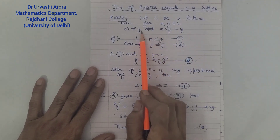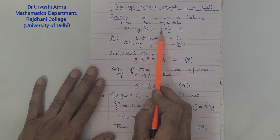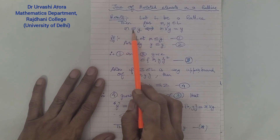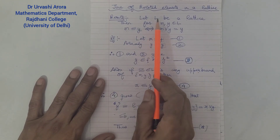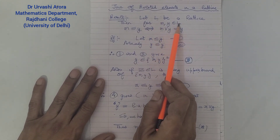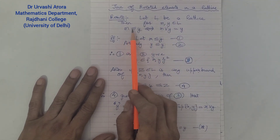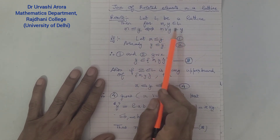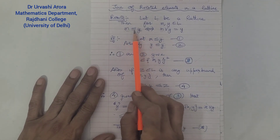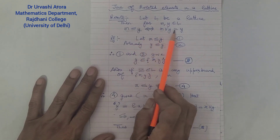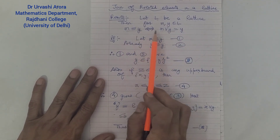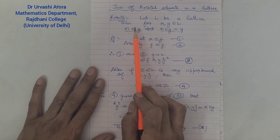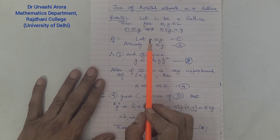The converse is also true: if x join y is y, then this implies that x is less than equal to y. So both ways the result is true. In a lattice L, if x and y are any two elements, then if x and y are related their join will be the element on the right, and if x join y equals y then x and y will be related. Both statements are equivalent — if one holds, the other also holds.